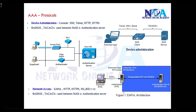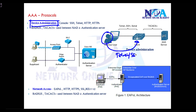Triple A uses multiple protocols. For device administration, when a user is trying to access a device remotely — maybe a router or a switch — they'll generally be using either Telnet or SSH for remote access, or if accessing via a graphical interface, HTTP or HTTPS. These are the protocols used between the end user and the authenticator device.